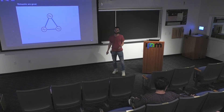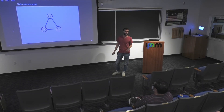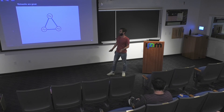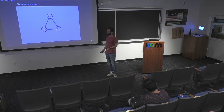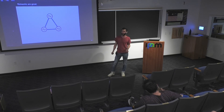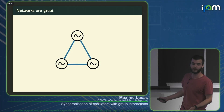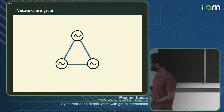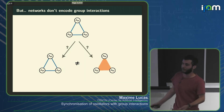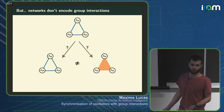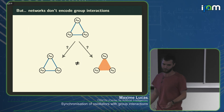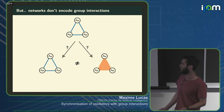I want to start by saying that we all like networks here, and networks are great. They've been used in the past decades to study and understand much better a lot of complex systems. They're basically sets of nodes linked by pairwise interactions, and that's what we most often use. Now, they're great, but one of their restrictions is that they don't take into account group interactions, which is a powerful simplification in some cases, but sometimes can hide some things that are happening.